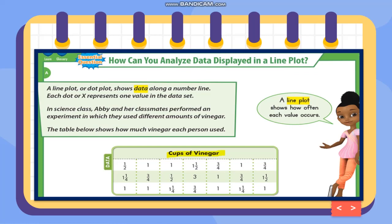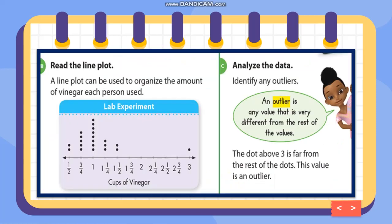Here is the next problem: in science class, Abby and her classmates performed an experiment in which they used different amounts of vinegar. The table shows how much vinegar each person used. The title of the table is 'Cups of Vinegar,' and the data includes: one-half, one, one and one-half, three-fourths, one, three-fourths, one and one-fourth, three-fourths, one-half, three, one, three-fourths, one and one-half, one, one, one and one-fourth, three-fourths, one, one and one-fourth, and one.